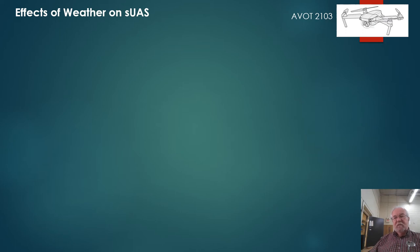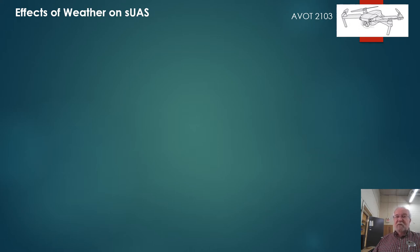Good morning. This is a continuation of our series for the Unmanned Aircraft Systems Technical Certificate at Southern Crescent. This is the final course, just a review course in preparation for the actual FAA written exam. Now, the effects of weather on a UAS — this should sound very familiar because we've just finished an eight-week segment on weather and the national airspace system. We're going to do a quick review on the effects of weather on small aircraft.